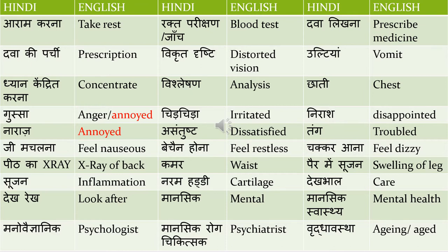Dawa ki parchi means prescription. Vikrut drishti means distorted vision — vikrut means distorted, drishti means vision. Ulti means vomit. Dhyaan kendrit karna means to concentrate — you can also say dhyaan lagana. 'Kripaya yahan par dhyaan kendrit kijiye' means 'please concentrate here.'